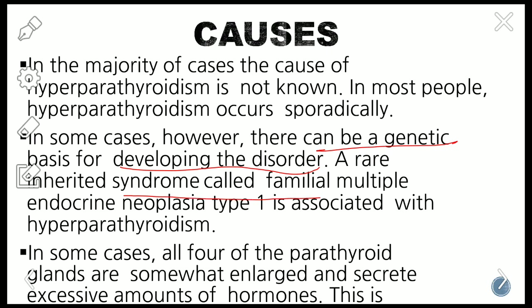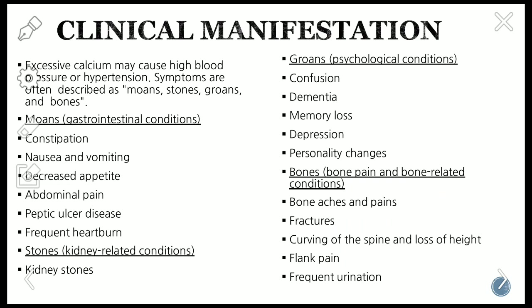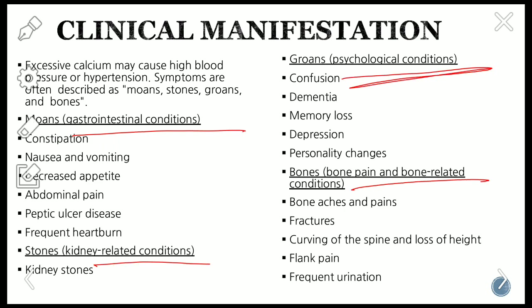A rare inherited syndrome called familial multiple endocrine neoplasia type 1 is associated with hyperparathyroidism. In some cases, all of the parathyroid glands are somewhat enlarged and secrete excessive amounts of hormone. The clinical manifestations of hyperparathyroidism mainly affect the GIT, kidney, psychic status, and bone.